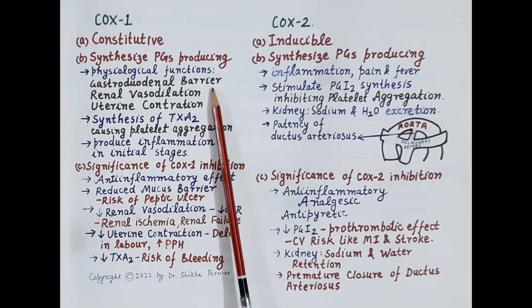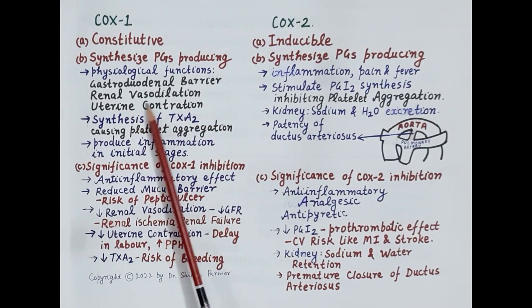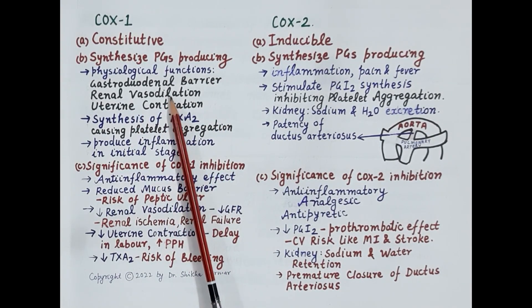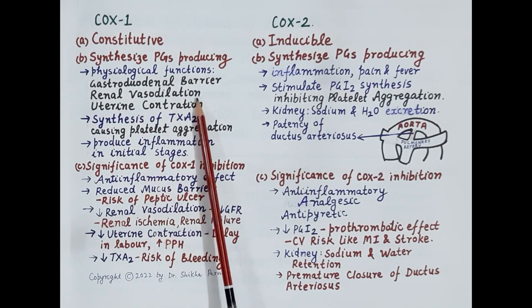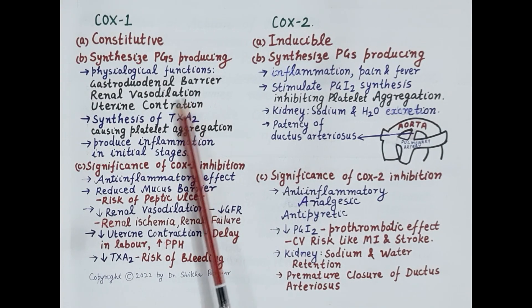COX-1 synthesizes prostaglandins producing physiological functions, such as synthesis of thick mucus that forms the gastroduodenal barrier and protects the wall of the stomach and duodenum from the corrosive effects of acid, pepsin, and hydrochloric acid. Prostaglandin E2, a protective prostaglandin, causes renal vasodilation, improves renal blood flow, and increases glomerular filtration rate.